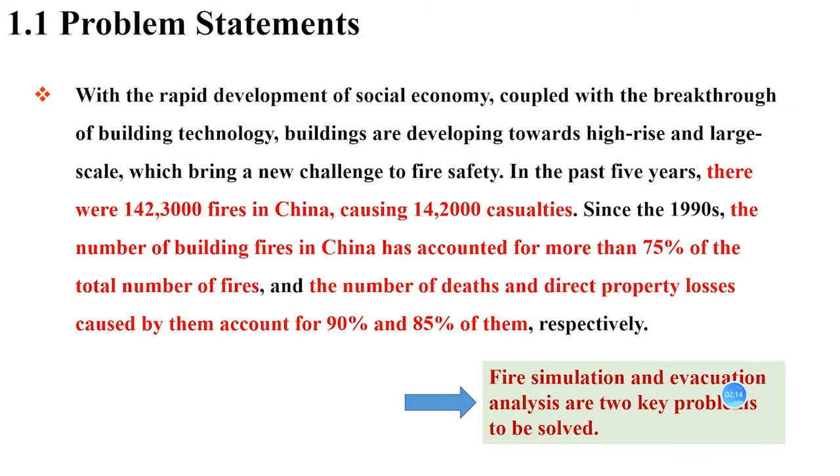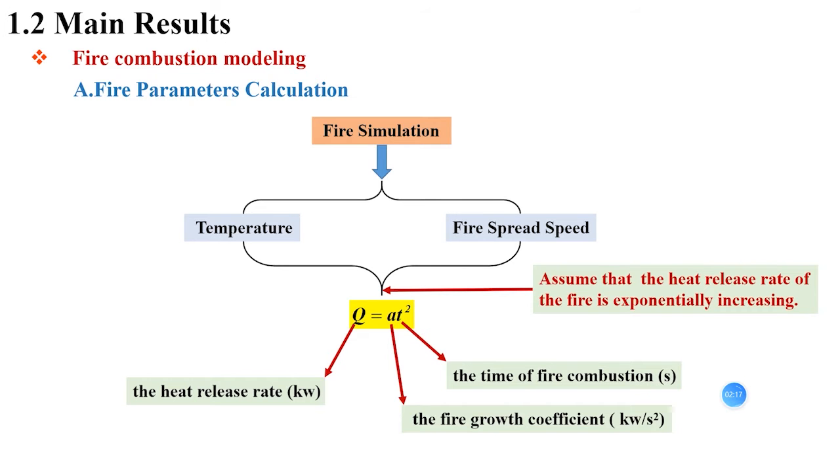The first result of this paper is fire combustion modeling. Temperature and fire spread speed are two important elements in fire simulation. In order to get temperature change around the fire source for accurate simulation of fire evacuation, we assume that the fire is caused by burning plastic substances and occurs in the chair of the teacher's office, and the heat release rate of the fire is increasing as follows.